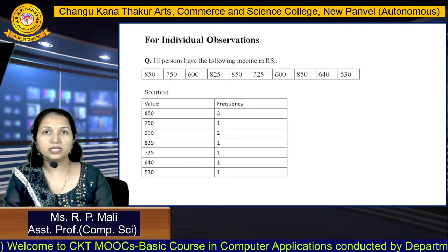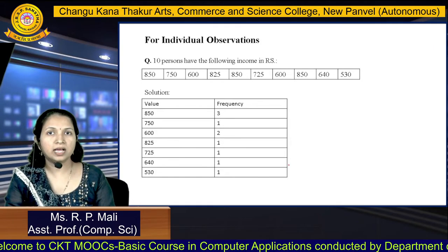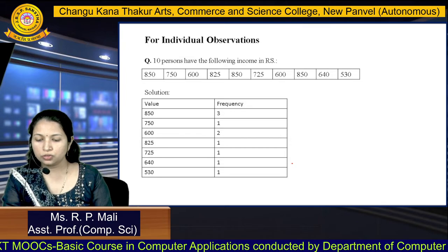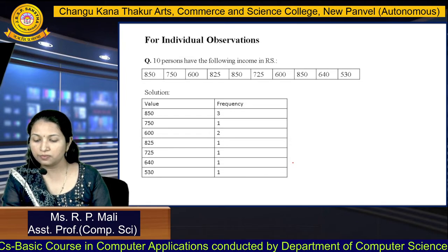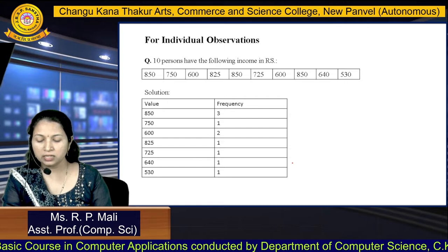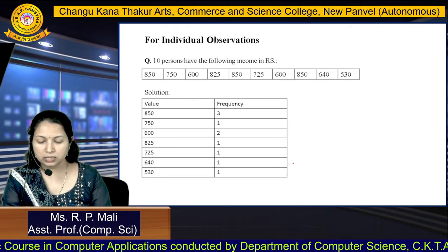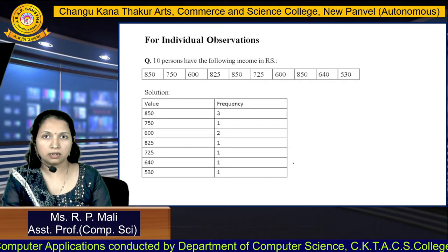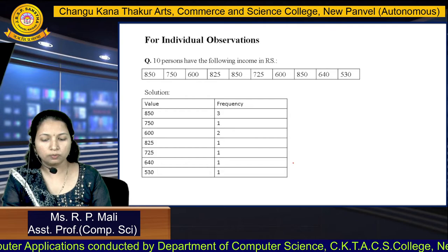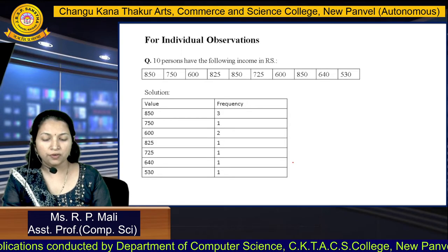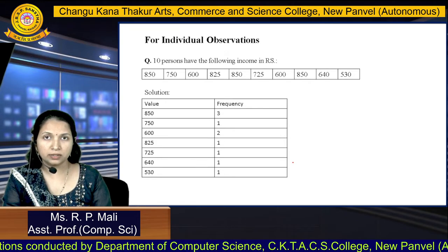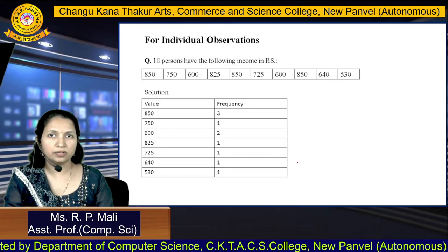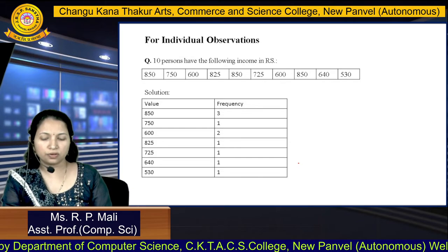We have data where 10 persons have the following income in rupees. The first person has an income of 850, the second person 750, the third person 600, the fourth person 825, the fifth person 850. Likewise, we have data for the rest of the persons.